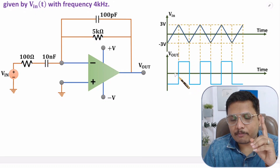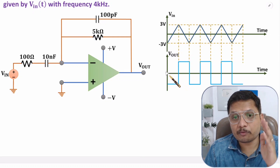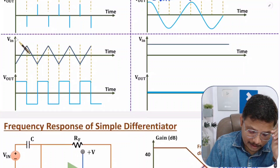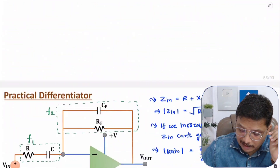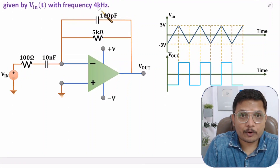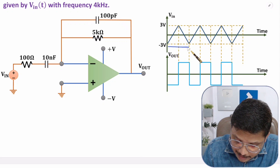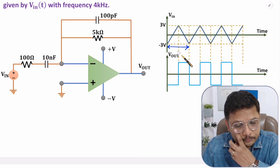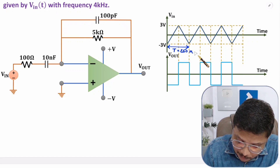In my first video on differentiation I explained that if the input is triangular, the output will be a square wave. Now let us identify the values. Frequency is 4 kilohertz, so the time period T = 1/4000 = 250 microseconds. For a half cycle, the time duration is 125 microseconds. The voltage range is from −3 V to +3 V, which is a total range of 6 V.